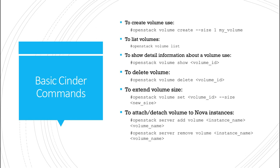Extending a volume size is also possible using the command `openstack volume set <volume_id> --size <new_size>`. To attach a volume to a Nova instance, use the command `openstack server add volume <instance_name> <volume_name>`. This is useful when you create a new volume and want to attach it to a running instance. To remove a volume from a running instance, use `openstack server remove volume <instance_name> <volume_name>`.